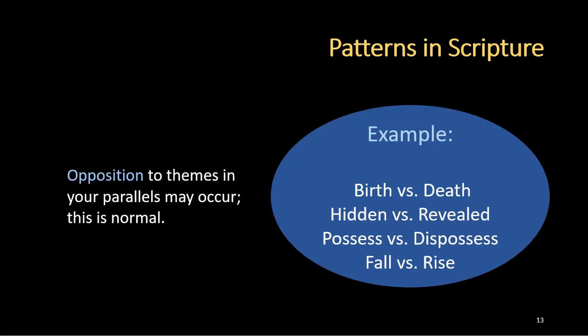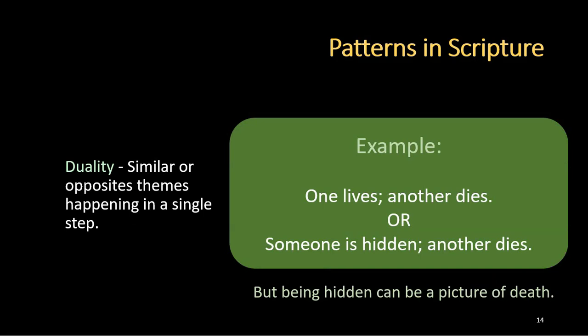Opposition to themes in your parallels may occur, and this is normal. An example of that would be birth versus death, hidden versus revealed, possess versus dispossess, or fall versus rise. Another thing that you might encounter is what I call duality, in which there are similar or opposite themes happening in a single step or in a single row of your chart. An example of this could be that one person lives while another one dies, or someone is hidden and another one dies — and that one who is hidden, although they're alive, could also be a picture of death.